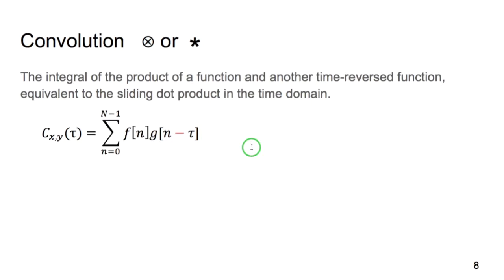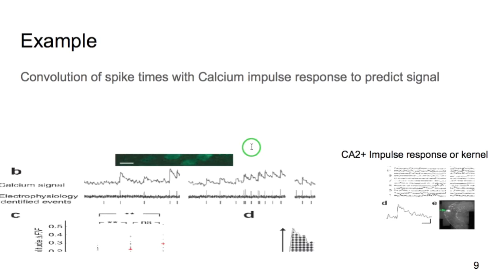So in the time domain, this is equivalent of computing a dot product, a sliding dot product at each sample. There are many uses of convolution. Filtering is a form of convolution. We'll get to that next. But another use of convolution would be to predict the calcium signal from spikes. So if the calcium impulse response, or kernel, is known, and we know when the spikes occur, we can convolve this signal with this kernel and predict what the calcium time course is going to be.